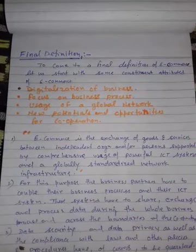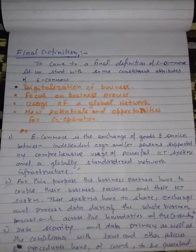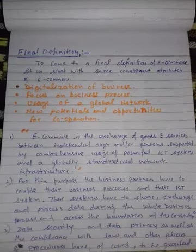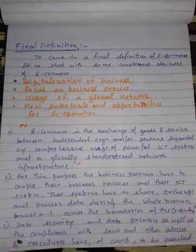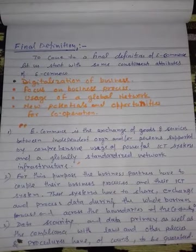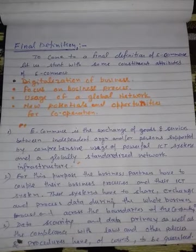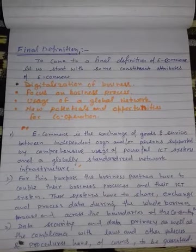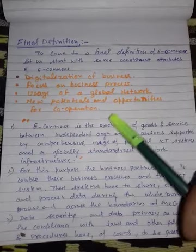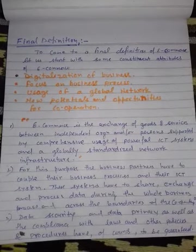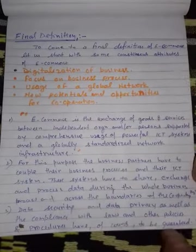The third attribute is use of global networks — e-commerce uses global networks and is usable for all customers wherever they live, whether in America, France, or any other country in the world; you can conduct business activities from anywhere. Fourth, new potentials and opportunities for cooperation — e-commerce provides new potentials and opportunities for businesses and consumers alike. These four attributes — digitalization, business process focus, global networks, and new opportunities — are all very important for e-commerce.